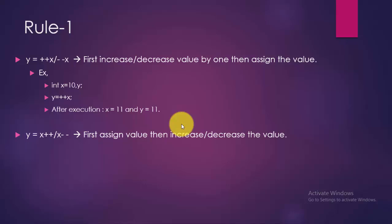When we get a postfix operator (x++ or x--), first assign the value and then increase or decrease the value by 1. For example, we have two integer variables x and y, and x = 10. Our equation is y = x++. Here, first we assign the value of x to y, then increase the value of x by 1. So after execution, x = 11 and y = 10.